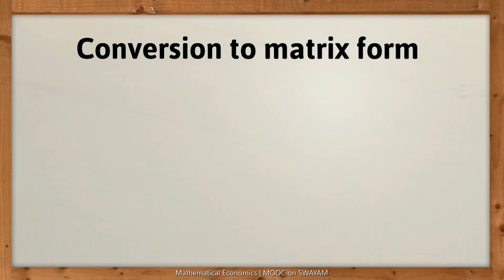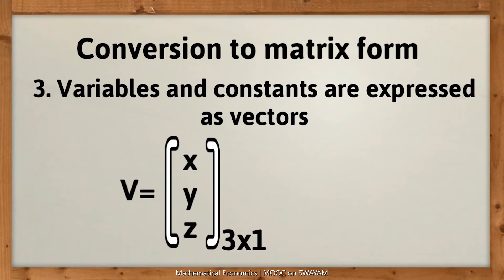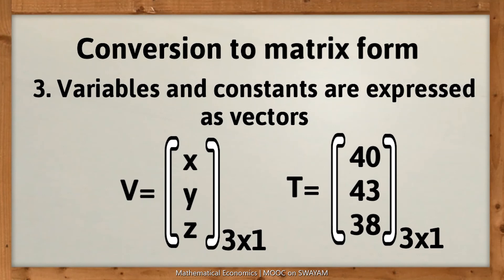Next, the variables and constants are written as a column vector. Let us name the vector of variables as V is equal to [x, y and z]. The constants on the right hand side of the equations may also be written as a column vector. Let us call it T is equal to [40, 43 and 38].